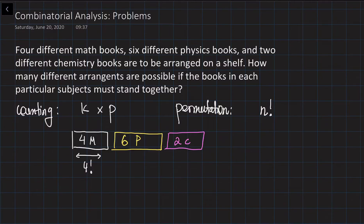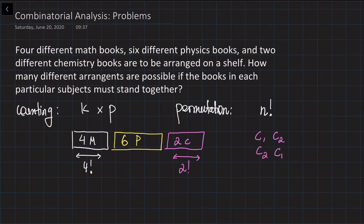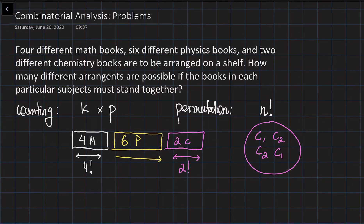The number of rearrangements of the two chemistry books is going to be equal to 2 factorial. For example, you have chemistry one and chemistry two — you can arrange them as C1, C2 or C2, C1, giving two rearrangements. And the number of rearrangements of the six physics books is equal to 6 factorial. So the number of rearrangements in one row is going to be the multiplication of 4 factorial times 6 factorial times 2 factorial.